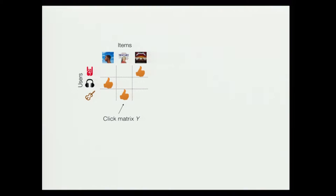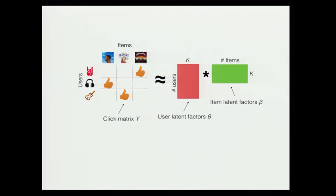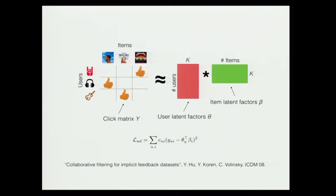I'll start with matrix factorization — it's pretty standard and I'm mostly just laying down some notation. We have this user-item matrix, which we call the click matrix, denoted Y, and we basically factorize it into the product of two low-rank matrices: the user latent factor theta and the item latent factor beta. This is the objective for the widely-used weighted matrix factorization method, which factorizes the click matrix into the product of theta_u and beta_i.